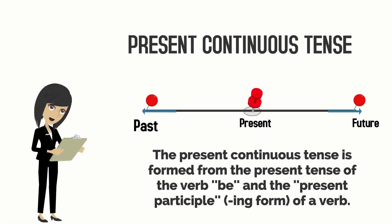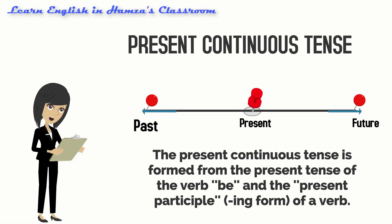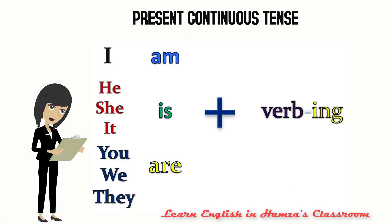The present continuous tense is formed from the present tense of the verb 'be' and the present participle — the 'ing' form of a verb. This is the basic positive sentence form of the present continuous. We will see the examples in this video.